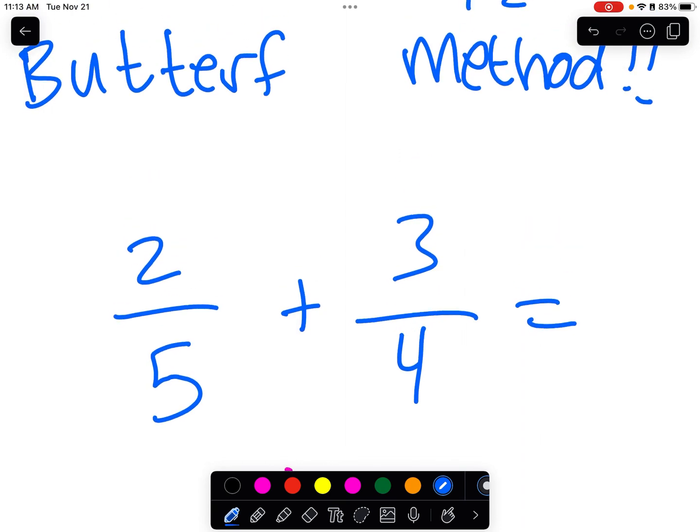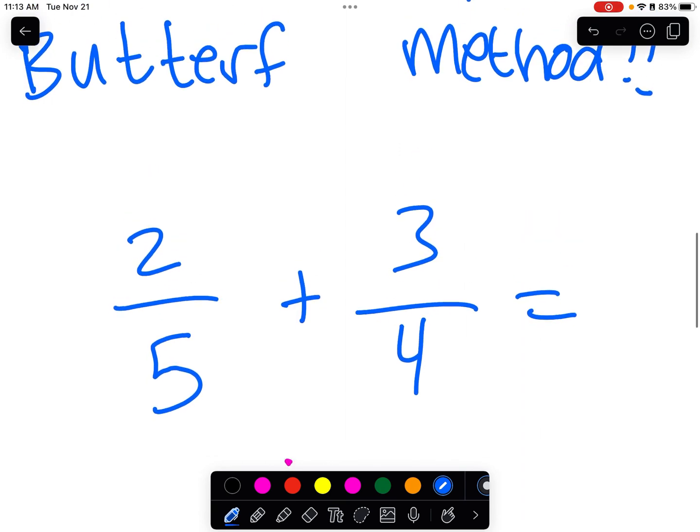Okay, here's what we're going to do, guys. This is the butterfly method. You take the denominators. You multiply them. Similar to the traditional method. That becomes the denominator again. 20. All right.